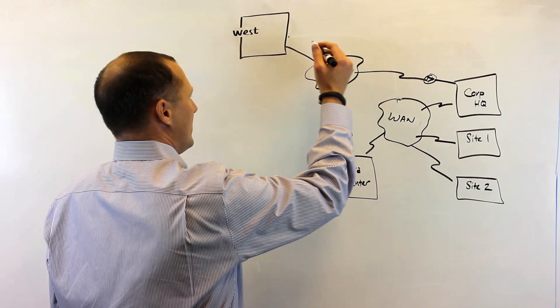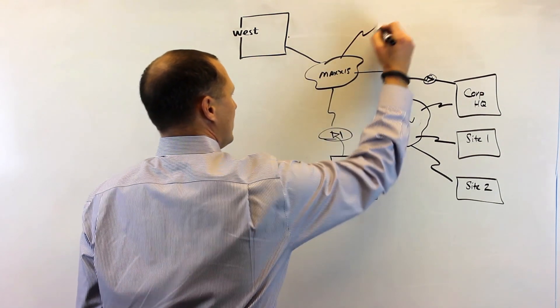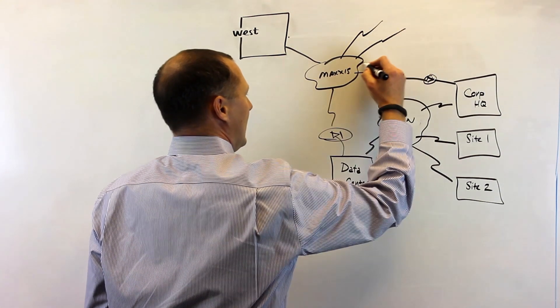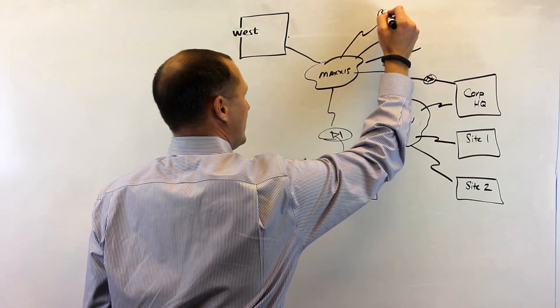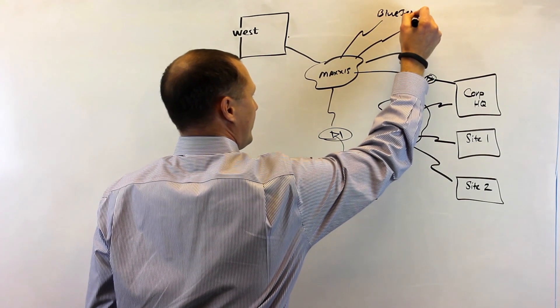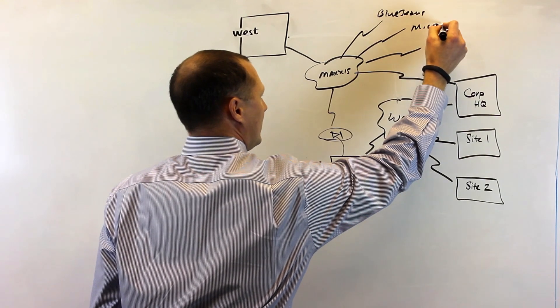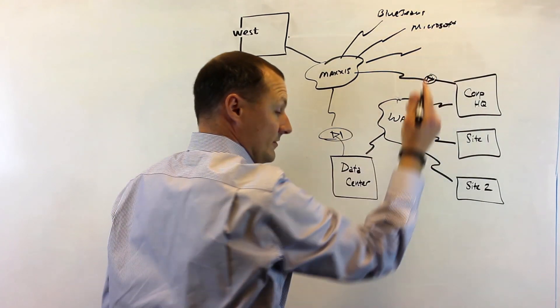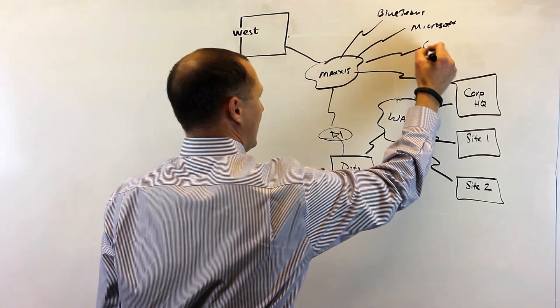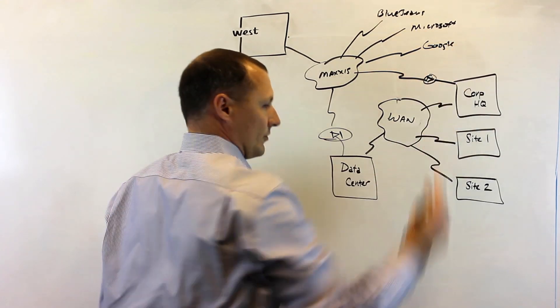And beyond the services that West may be providing, we also have the ability of extending connections out to our other peering partners such as BlueJeans Network, Microsoft for services such as Office 365, or even over to Google for Google Apps users.